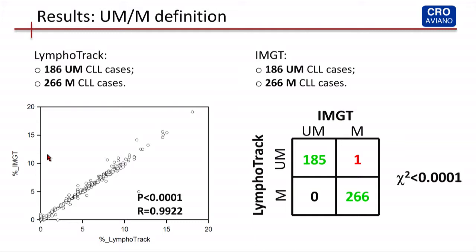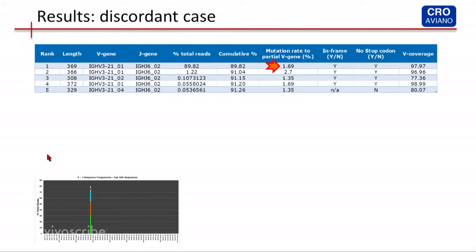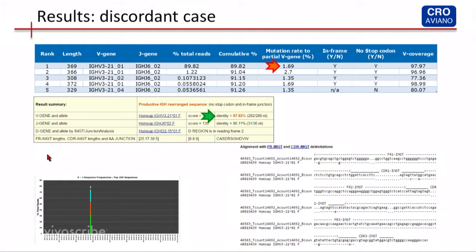In terms of unmutated or mutated definition, we have perfect agreement between IMGT and Lymphotrack except for one case. This is a VH3-21 IGHV gene — unmutated by Lymphotrack and mutated by IMGT. I have no explanation for this discrepancy, but it doesn't matter much because this case is a VH3-21 case with a stereotyped CDR3. It's well reported that patients with VH3-21 IGHV gene and stereotyped CDR3 experience bad prognosis irrespective of IGHV mutational status.